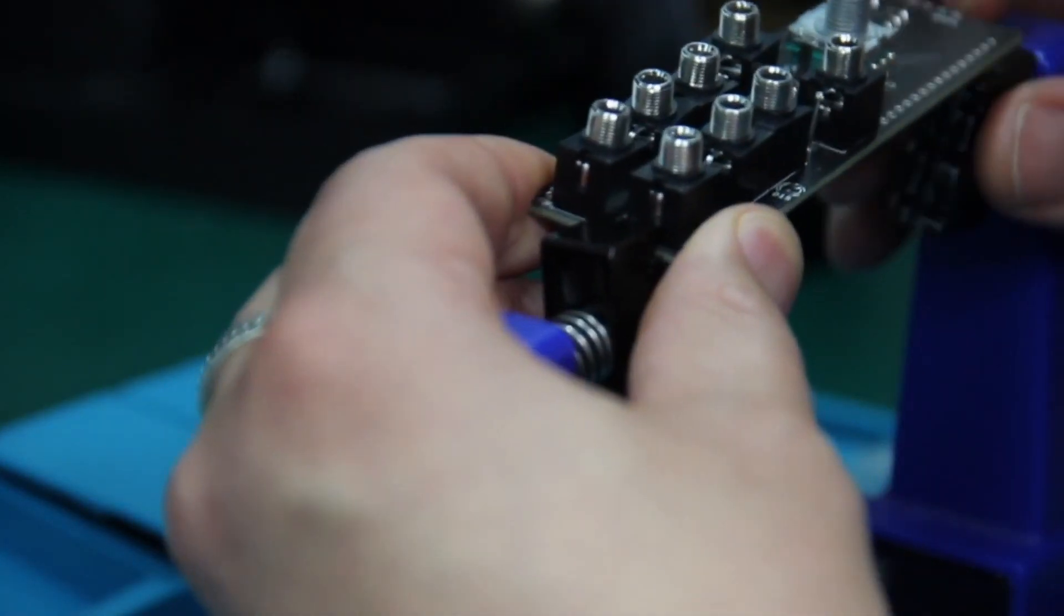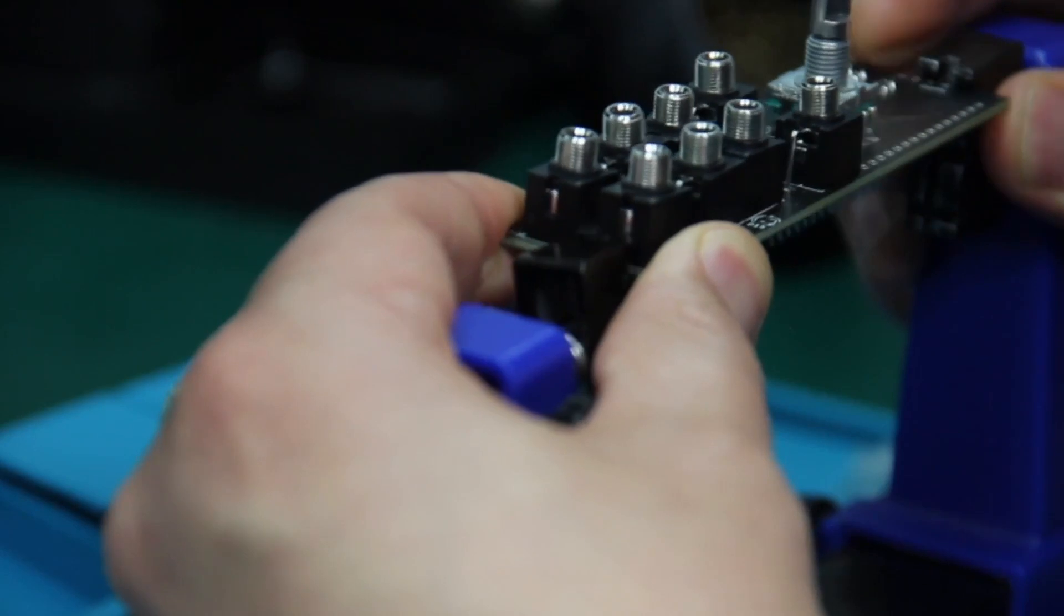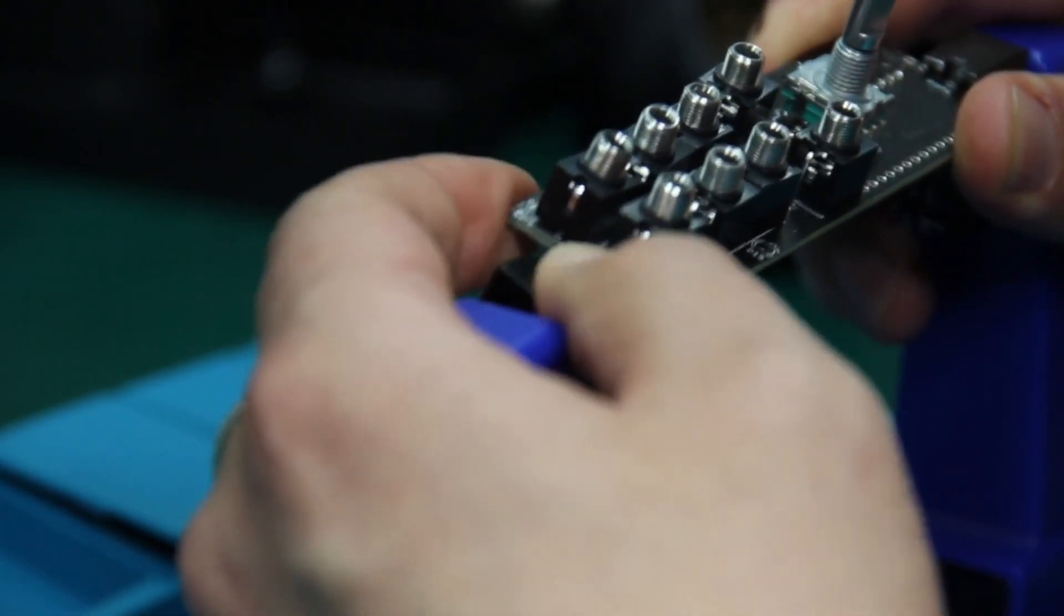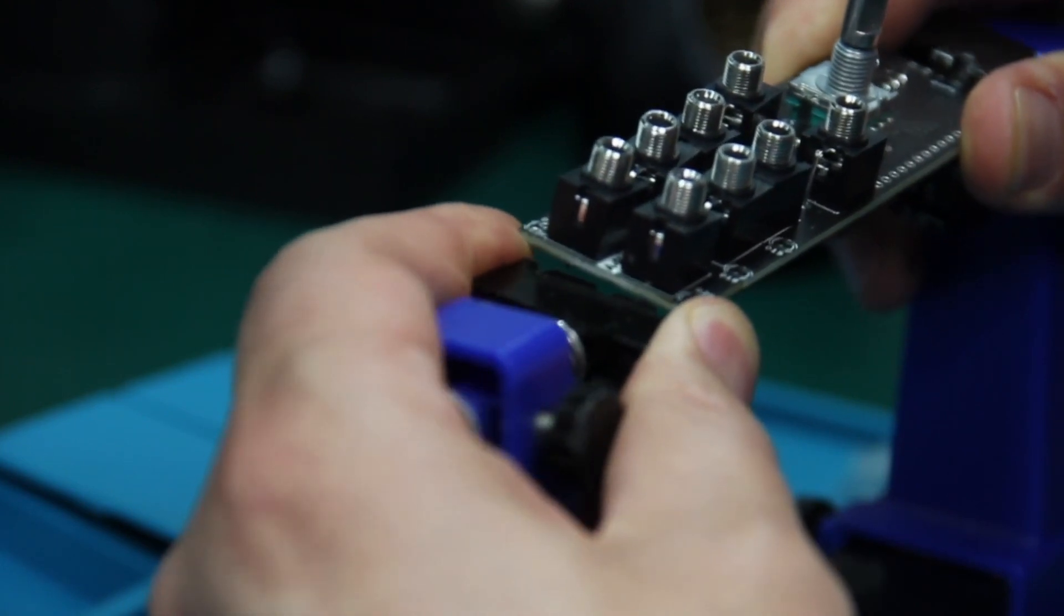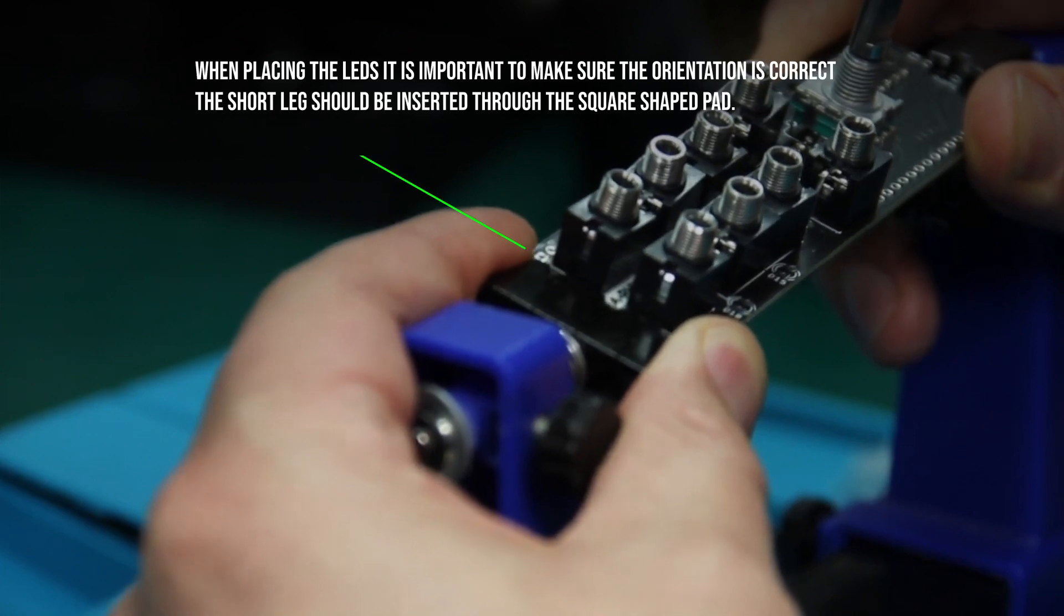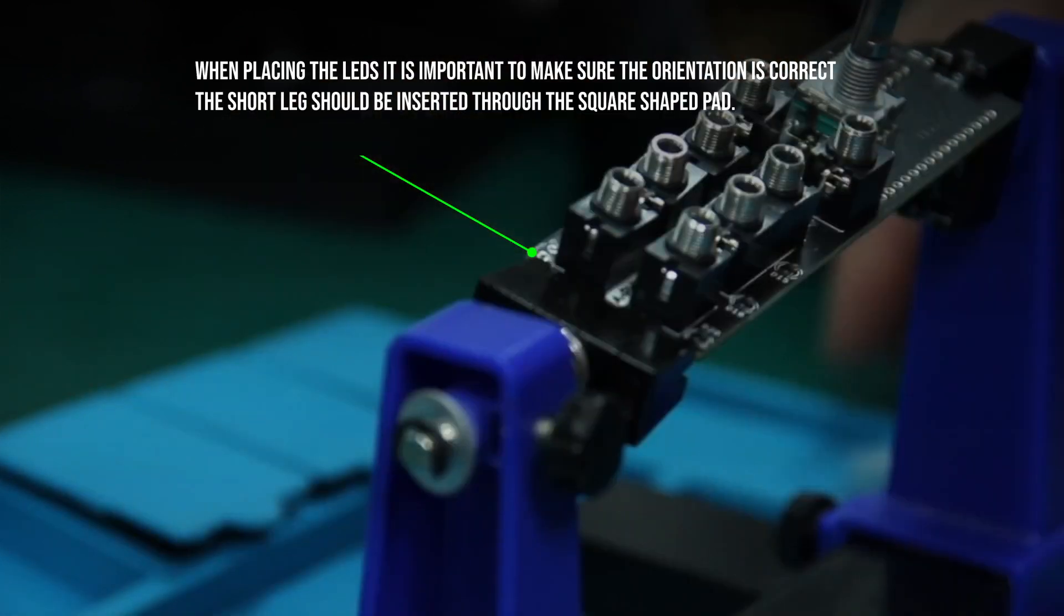We can also place the LEDs before attaching the front panel. It is important to be careful with the polarity of the LEDs. The short leg indicates the ground pin and should be inserted into the square shaped pad.